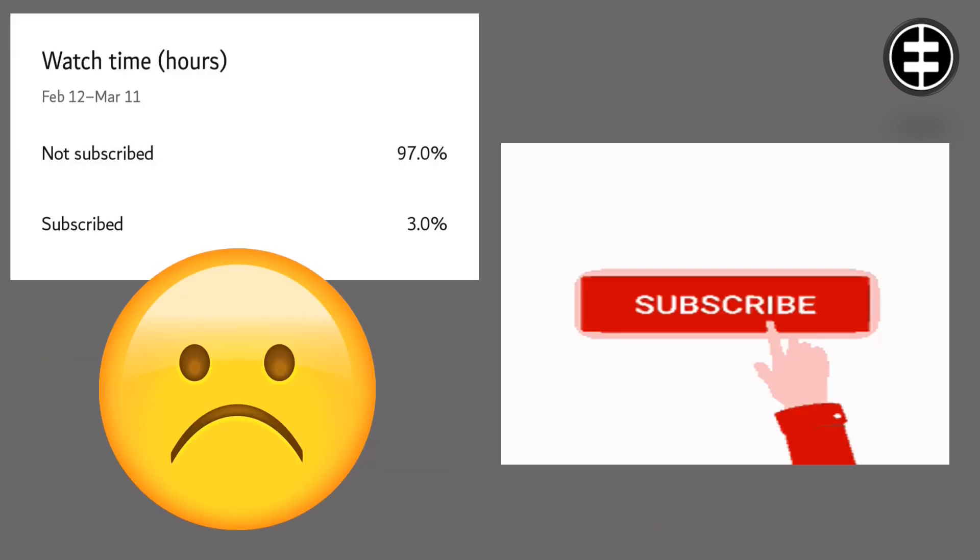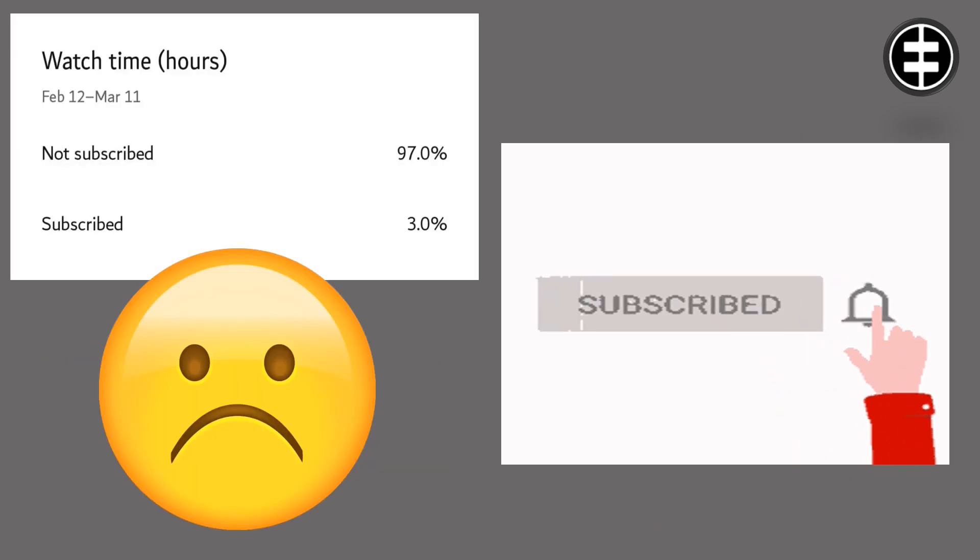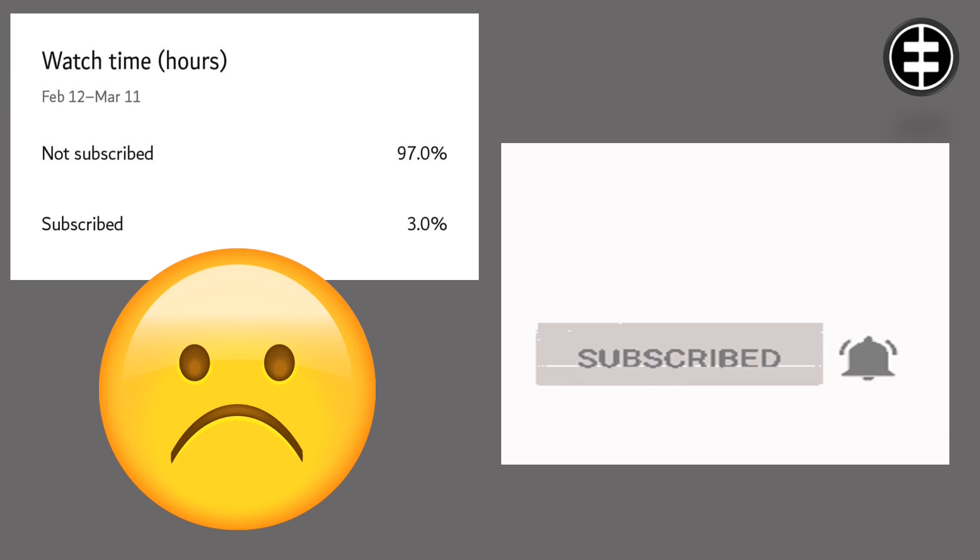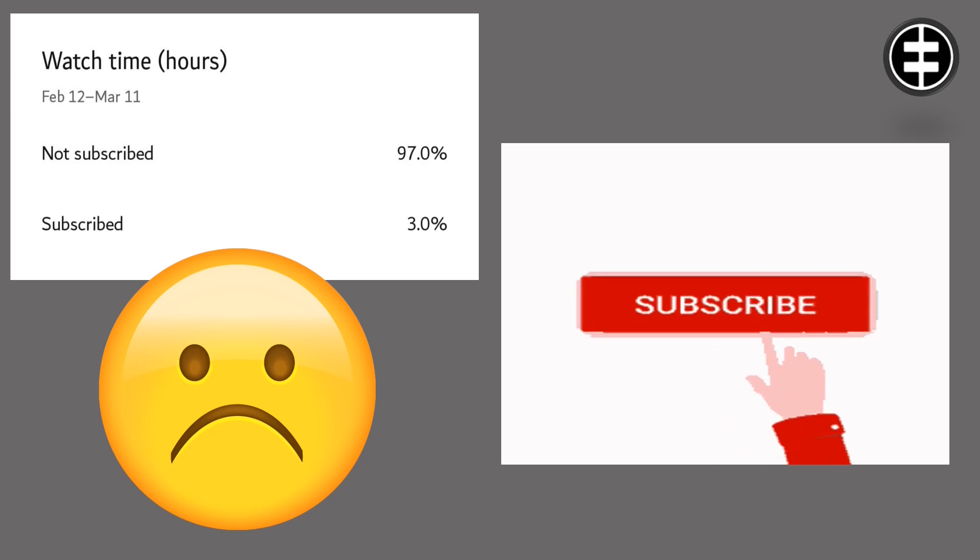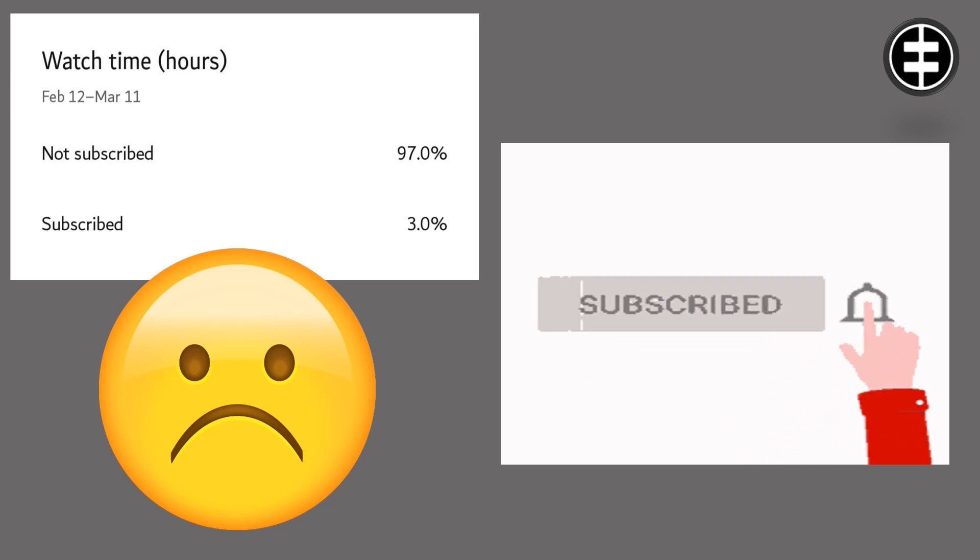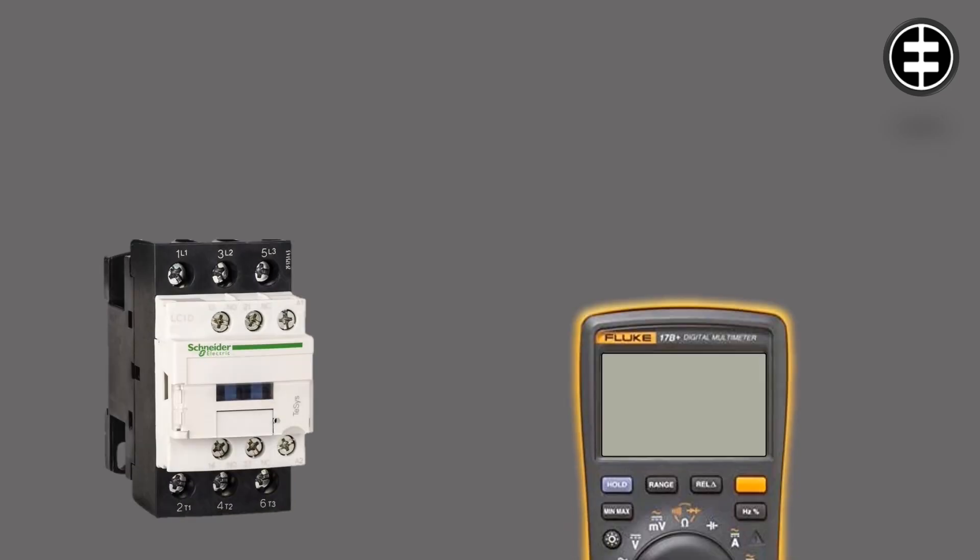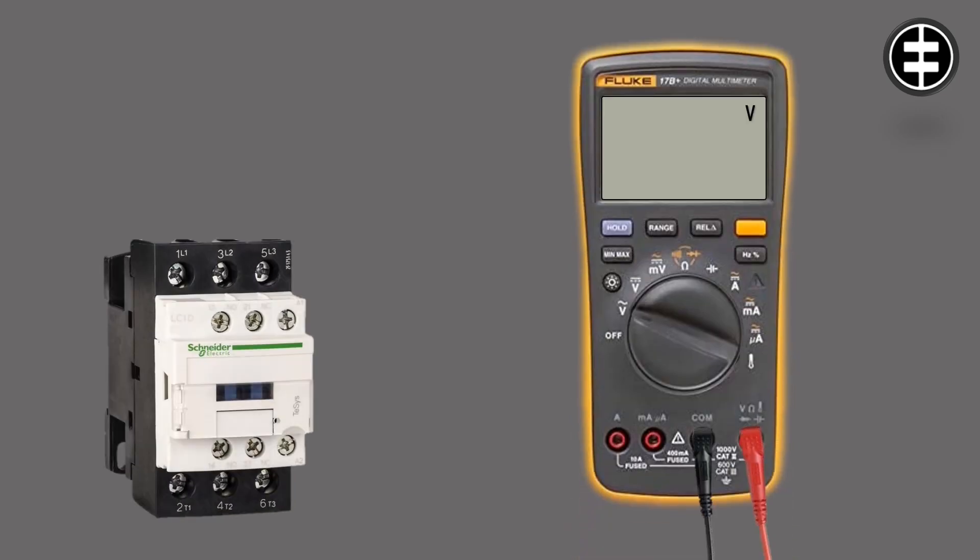Before continuing, 97% of people watching our videos forget to subscribe, so subscribe now. Measure the coil voltage just as the contactor is powered up. Put the multimeter probes into the contactor terminals A1 and A2, power up the contactor, and check the voltage measurement.